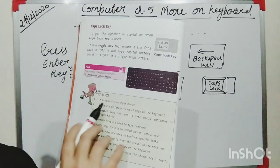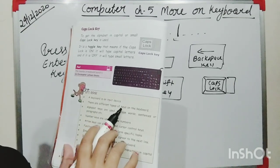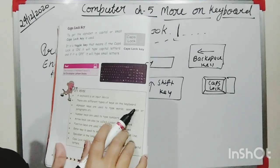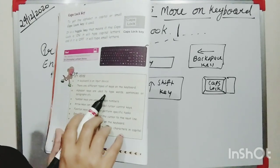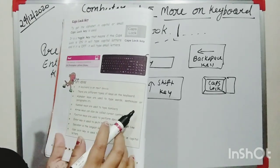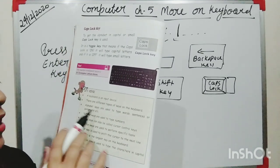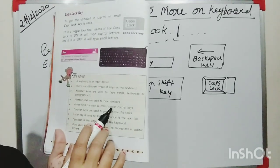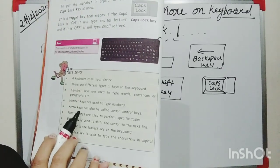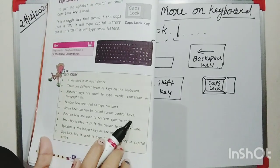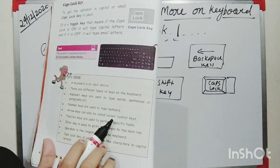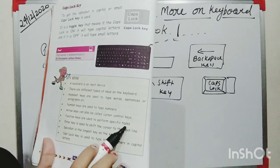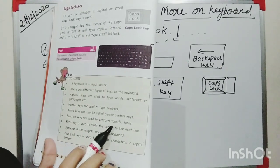A keyboard is an input device. There are different types of keys on the keyboard. Alphabet keys are used to type words, sentences, or paragraphs. Number keys are used to type numbers. Arrow keys can also be called cursor control keys. Function keys are used to perform specific tasks.